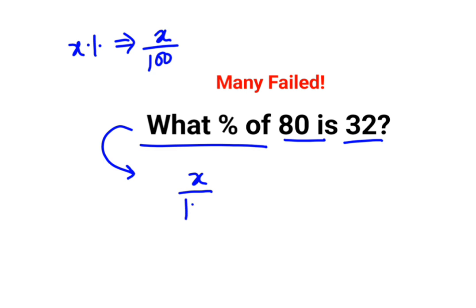So we will have X upon 100 of, of stands for multiplication. Then we have 80, is means equal to 32.